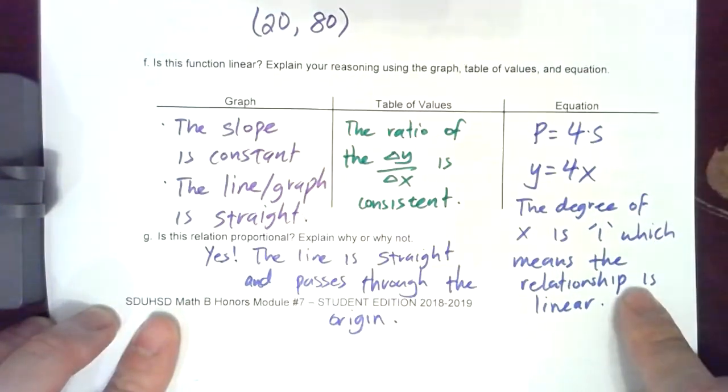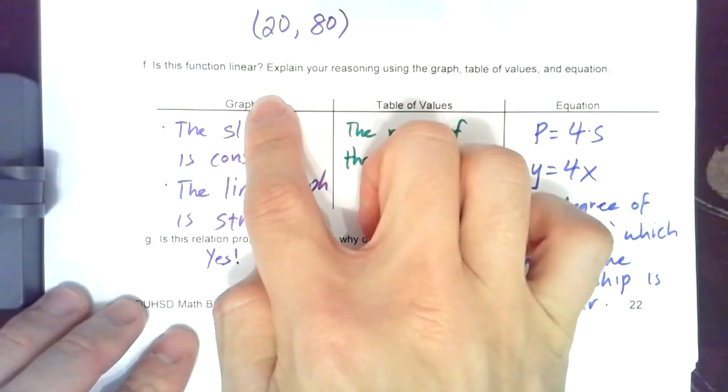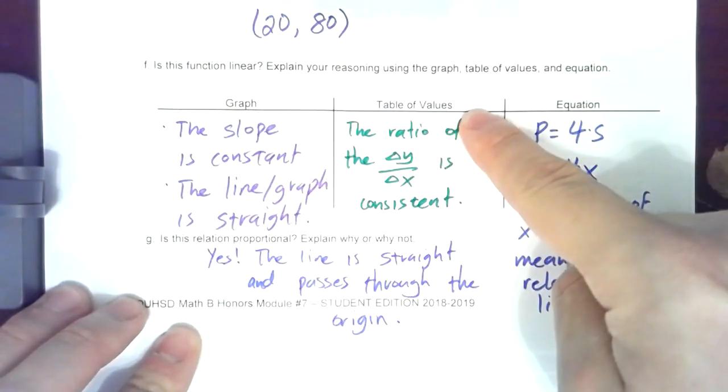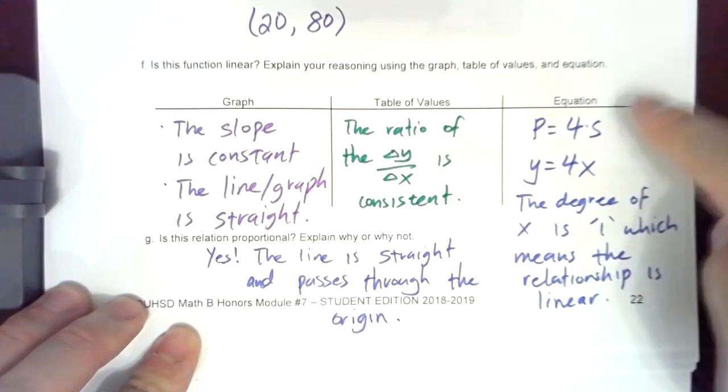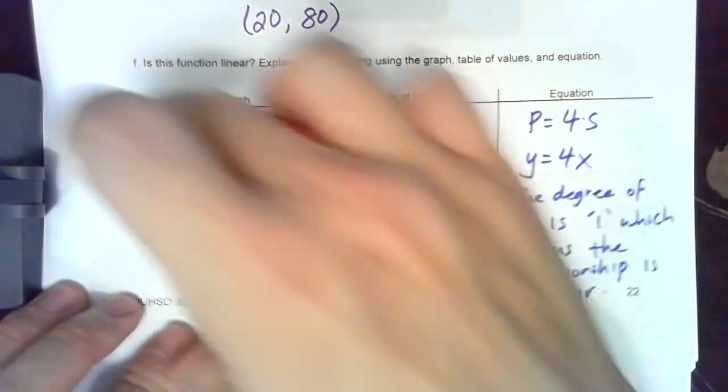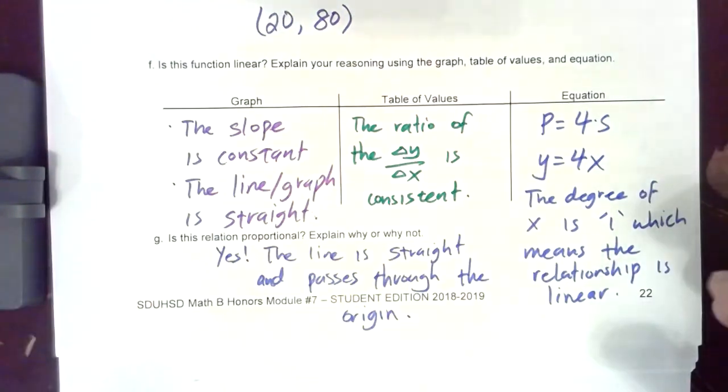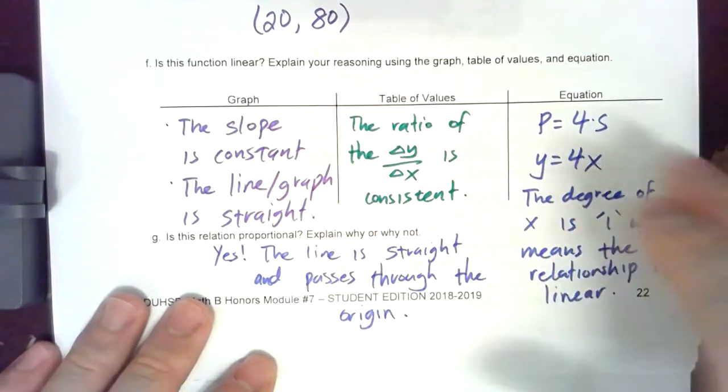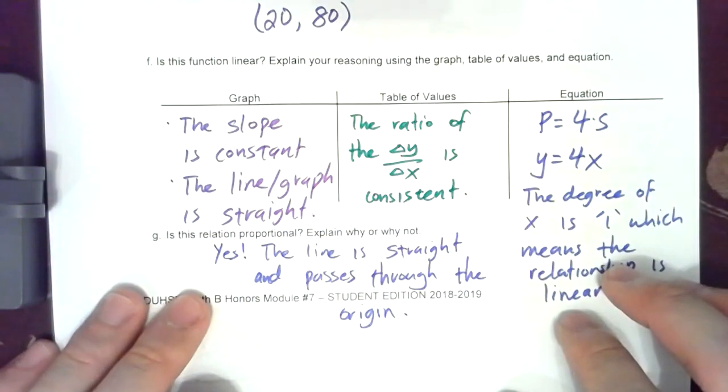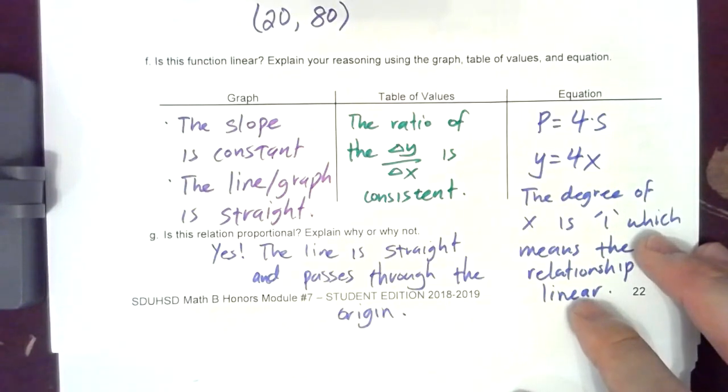This is something that we all want to review: how do you know a graph is linear, how do you know the table of values is linear, and how do you know an equation is linear. So you want to be able to explain it in words and sentences why something is linear and why something is not linear. Okay so please review this. All right take care everyone, see you next time.